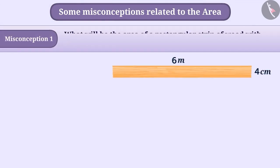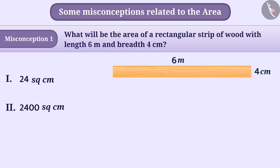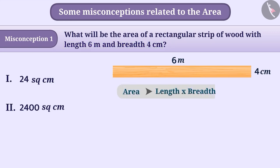Misconception 1: What will be the area of a rectangular strip of wood with length 6m and breadth 4cm? Some students fail to pay attention to the units while finding the area. They ignore the units and copy the numbers as given in the question, placing them directly in the formula: area = length × breadth, giving them 6 × 4 = 24.